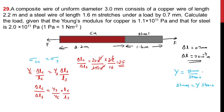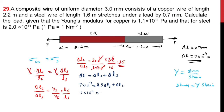The total extension is given as δL = 7×10⁻⁴ meter, which is the sum of extension in copper and extension in steel. Since δLc = 2.5 × δLs, we write: 7×10⁻⁴ = 2.5 δLs + δLs = 3.5 δLs. Therefore δLs = 7×10⁻⁴ / 3.5 = 2×10⁻⁴ meter.